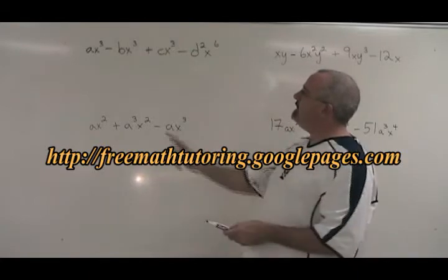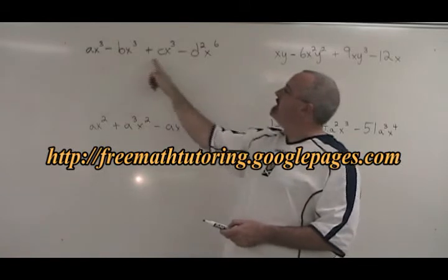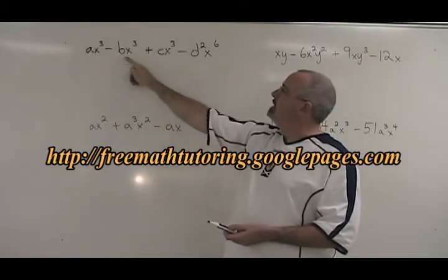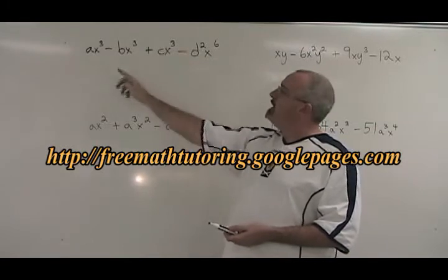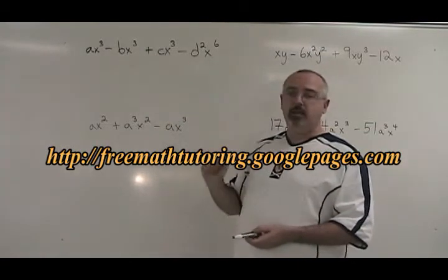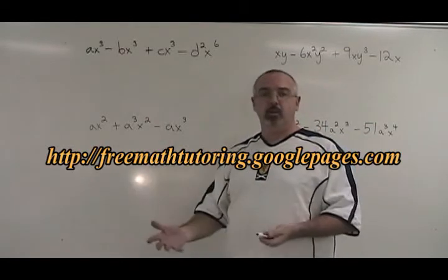The common factor of these four terms cannot include an A because not all four terms have an A. For the same reason, it cannot include a B, a C, or a D. It's going to include an X because we see that all four terms have an X. But what should we factor out? Should we factor out X, or X squared, or X cubed?